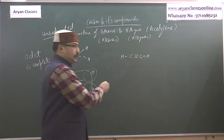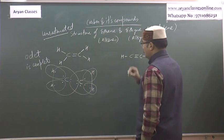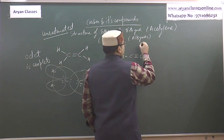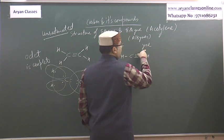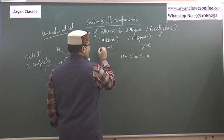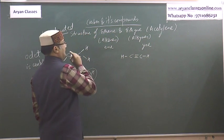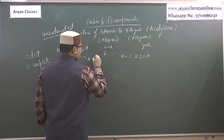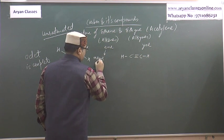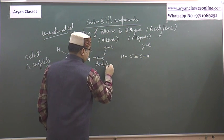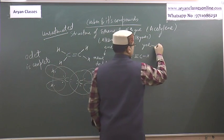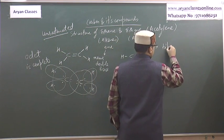Now we can understand from this structure also about ethyne. Ethyne - dekheye 'yne' aa raha hai means triple bond. 'ene' aa raha hai means double bond. So 'ene' means double bond and 'yne' means triple bond.